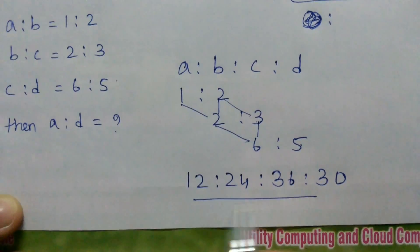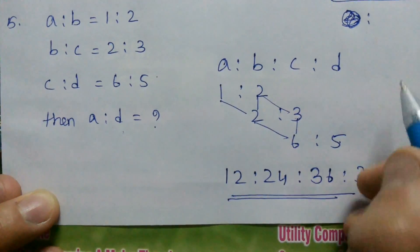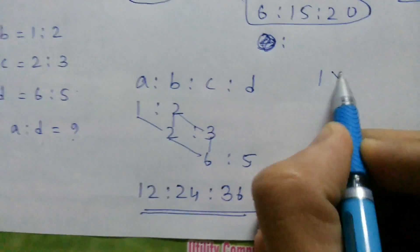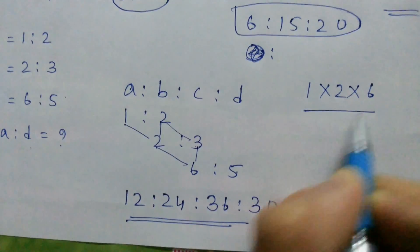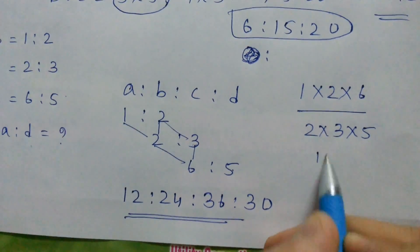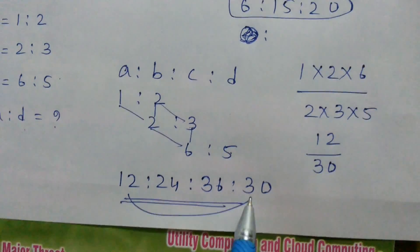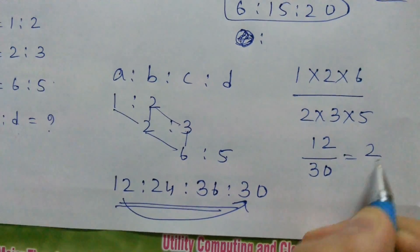So this is the ratio. But if you want A is to D, there is another shortcut method. Just multiply all the numerators. That is 1 into 2 into 6 by 2 into 3 into 5. We get 12 by 30. That is 12 is to 30, nothing but 2 by 5.